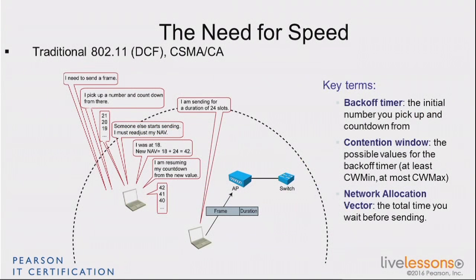Suppose you need to send a frame. The first thing you do is wait a DIFS, which is why DIFS is so important. You listen to the air, and if somebody is sending, you wait until there is no communication anymore, then you wait that DIFS. If at any time during the DIFS you hear a transmission, you stop counting, wait for the transmission to end, and when there is silence again, you restart waiting the full DIFS. Everything starts when there is an entire DIFS of silence. Then you don't want to send immediately, because if everybody does the same, they all wait a DIFS and send at the same time — causing collisions.